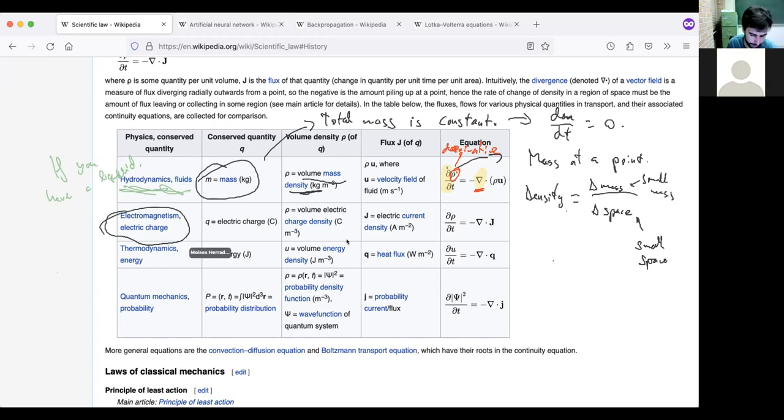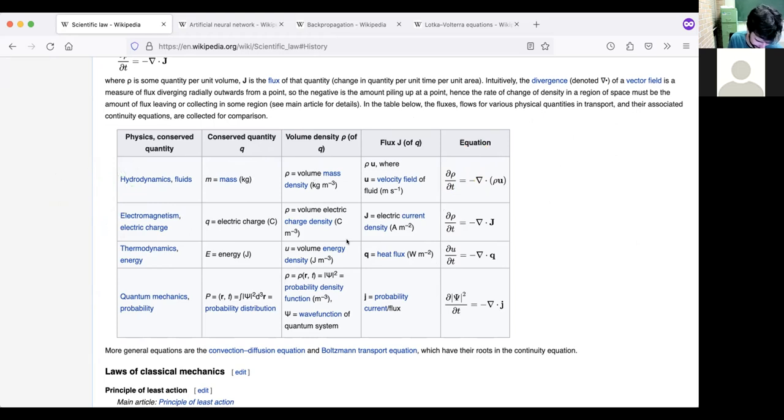And then you look to the next row, and it's exactly the same thing except with charge. This is saying, so now this is charge density. I don't know how many electrons you have in your fist. It's saying if the amount of charge somewhere is changing, it's because it's somewhere else. That is exactly what that equation is saying. This is the same thing about heat or energy. Again, exactly the same thing.